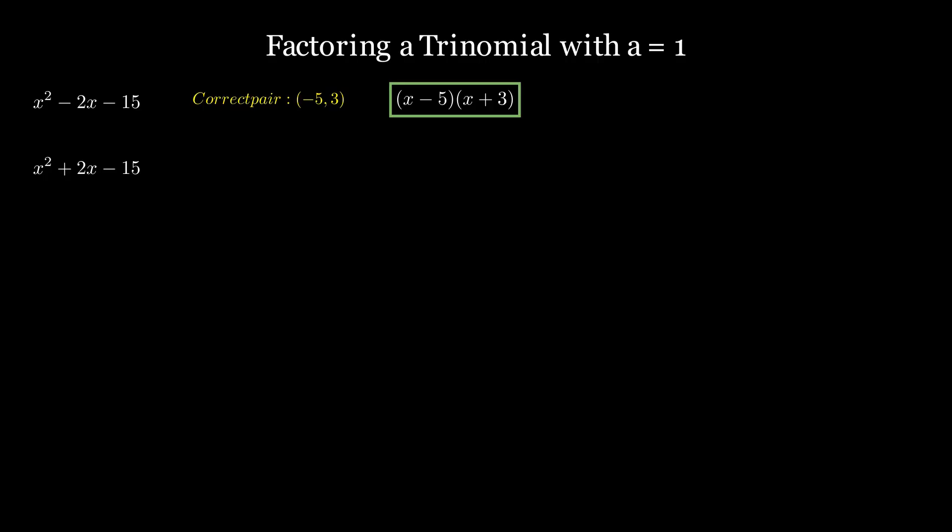Next example: x squared plus 2x minus 15. Here, we're looking for two numbers that add up to plus 2 and multiply to minus 15. The correct pair is plus 5 and minus 3, which gives us x plus 5 times x minus 3.